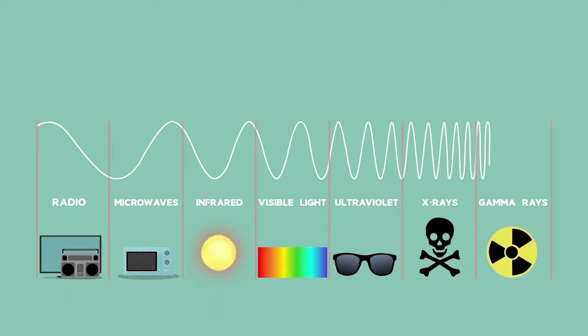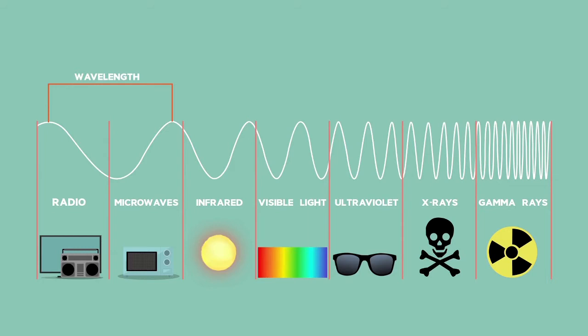These waves can have a variety of different wavelengths and frequencies which give them different properties. This collection of different electromagnetic waves is called a spectrum. You might recognize some of the names of the waves there.